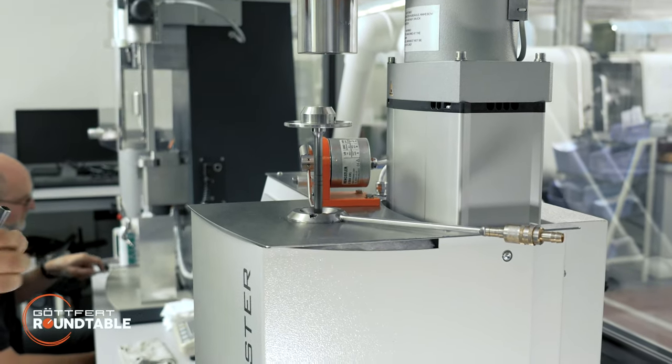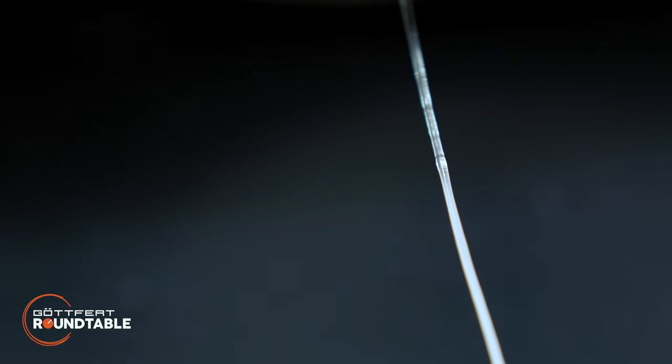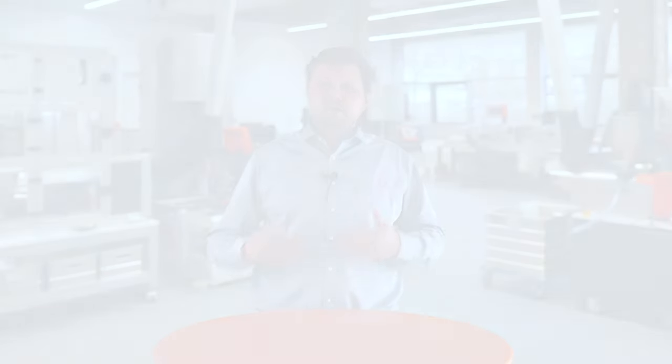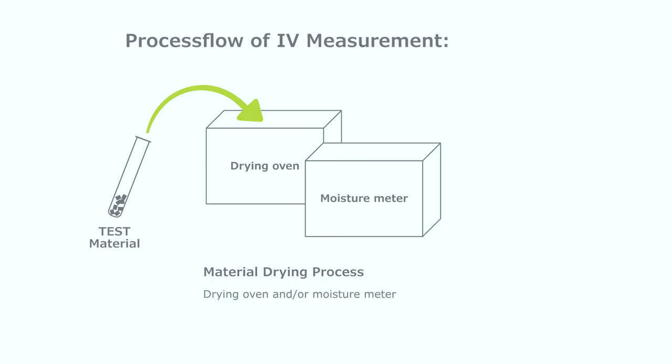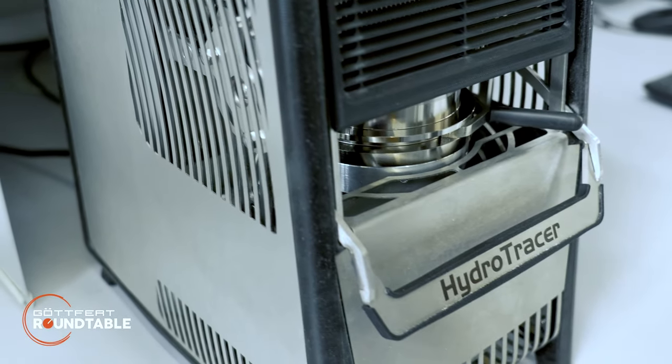Now let's look at the actual workflow with the IV tester. The IV tester is actually a slightly modified melt indexer. It consists of a heated barrel with a capillary at the bottom. PET and PA are hydrophilic, meaning they take up moisture from the surrounding, so we need to dry the material before we can test it. For that, we can either use our oven or a humidity tester for even faster drying.